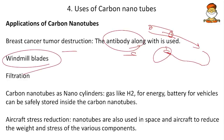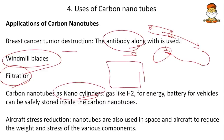Carbon nanotube applications also include windmill blades — graphene is very tough, can cover windmills making them stronger, and can store charges harnessed as electrostatic energy. For filtration, candles made of carbon nanotubes can be used in ROs and aquaguards. Carbon nanotubes are also used as nano cylinders — instead of one big cylinder, many carbon nanotubes store gases more efficiently.